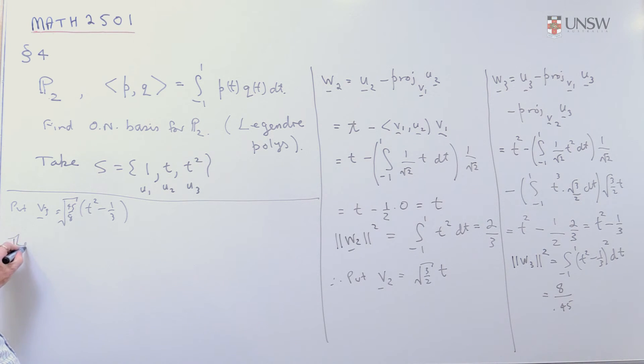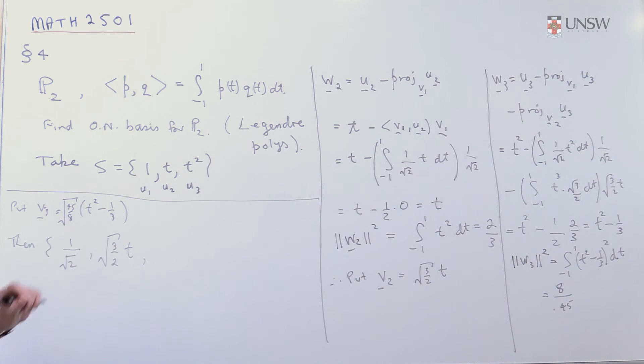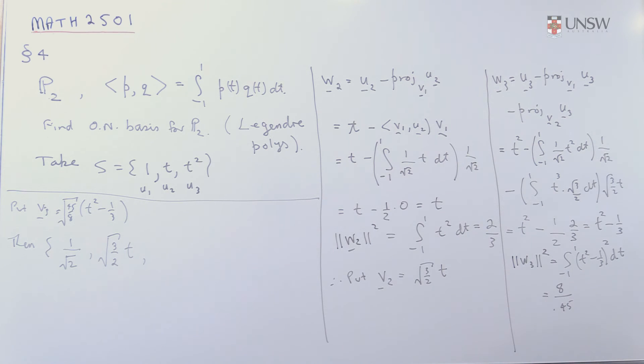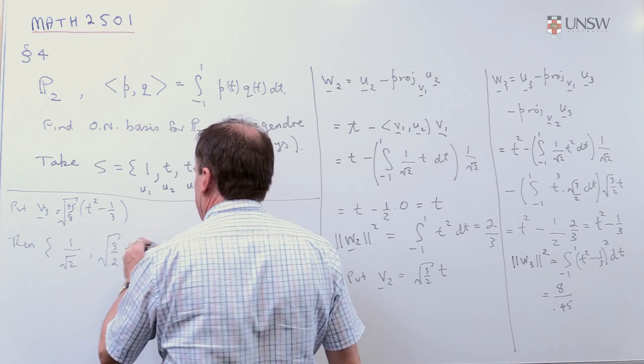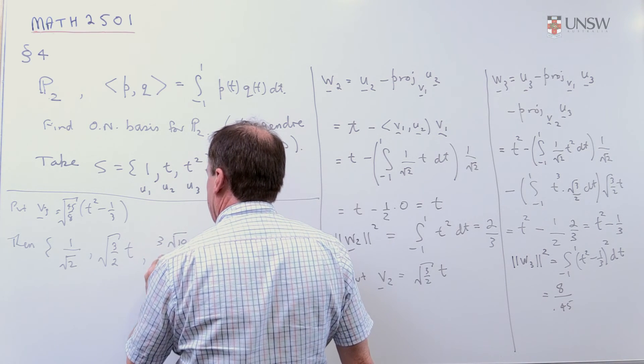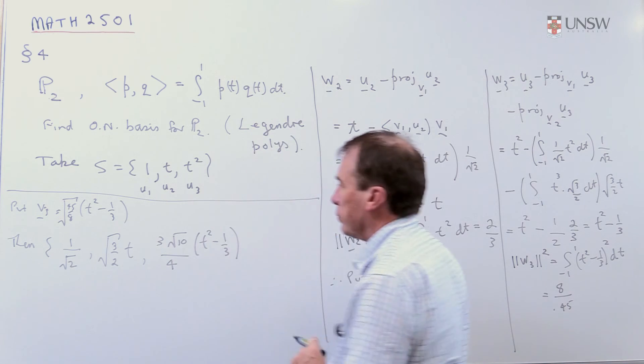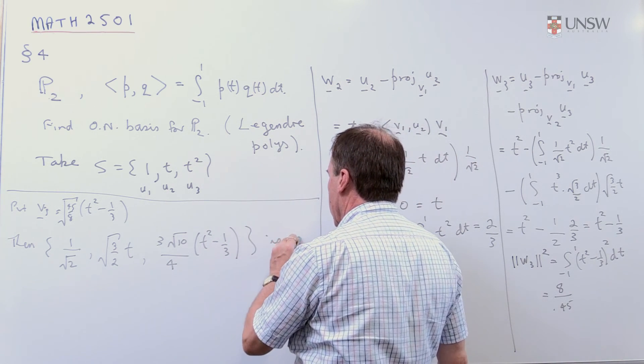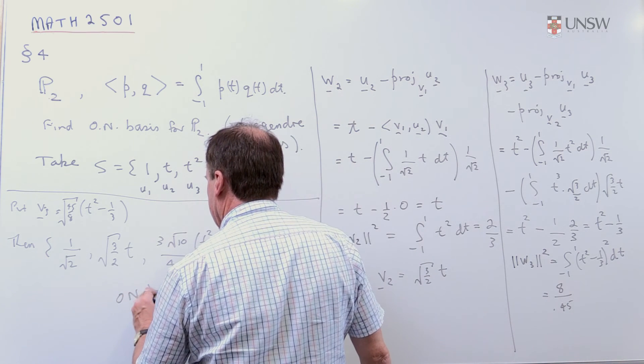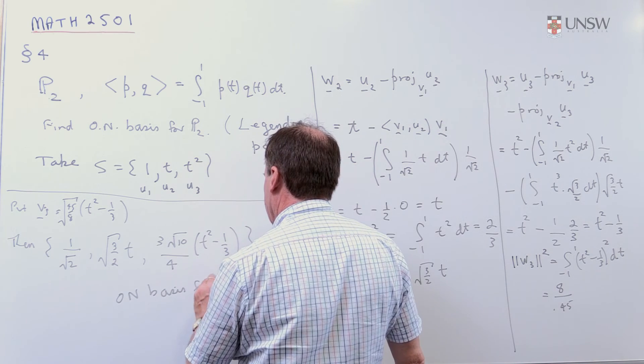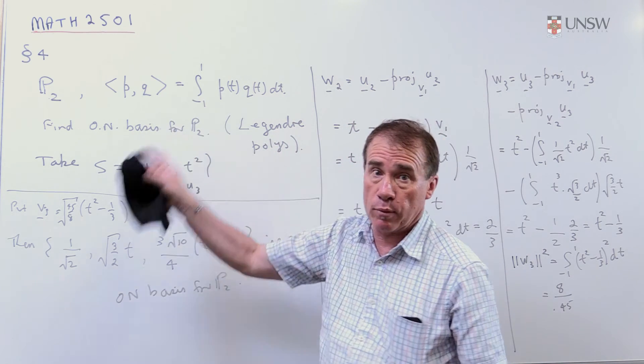And, then, here is my orthonormal basis. So, the V1, you remember, was one on root two. The V2 is root three on two, square root T. And, finally, I have this one, and I can simplify that a little bit. You get three root ten on four when you simplify this a little bit. So, three root ten on four times T squared minus a third. So, that one is an orthonormal basis for P2, with respect to this inner product.